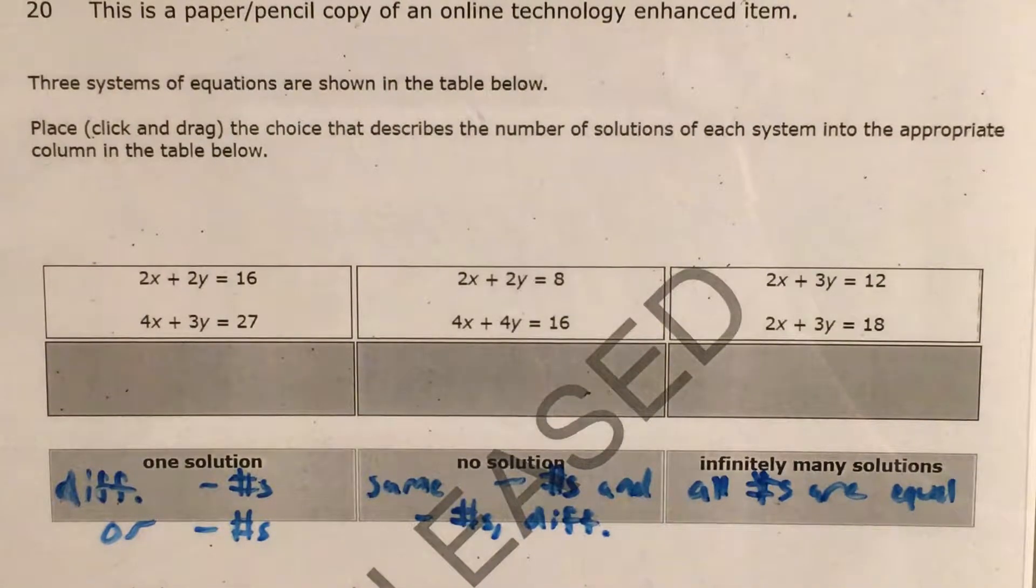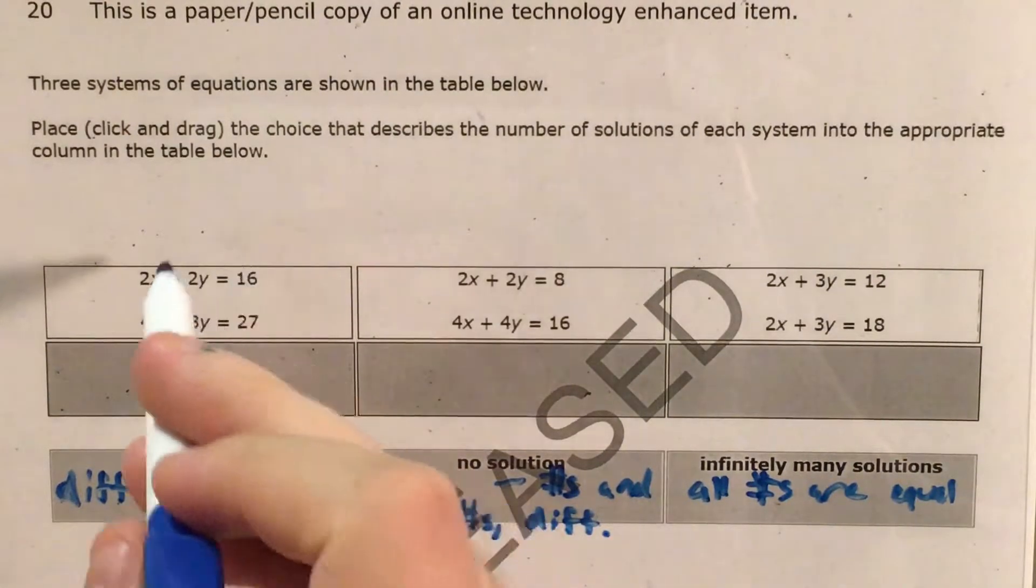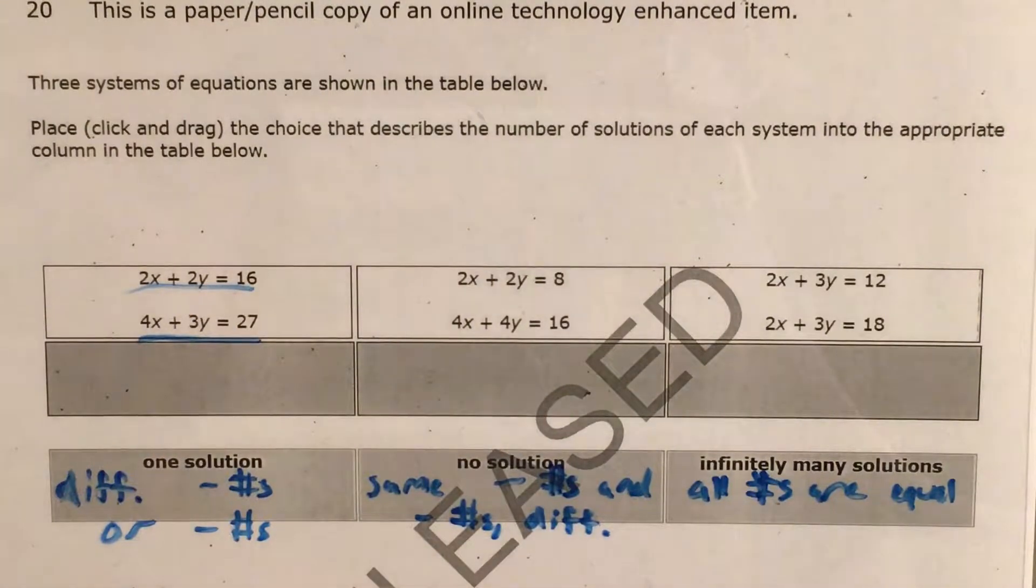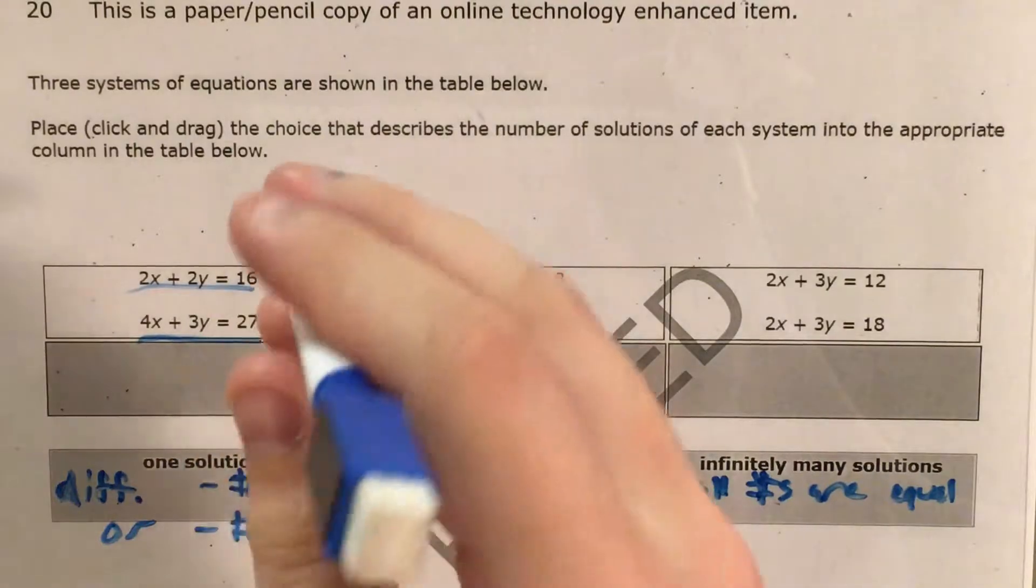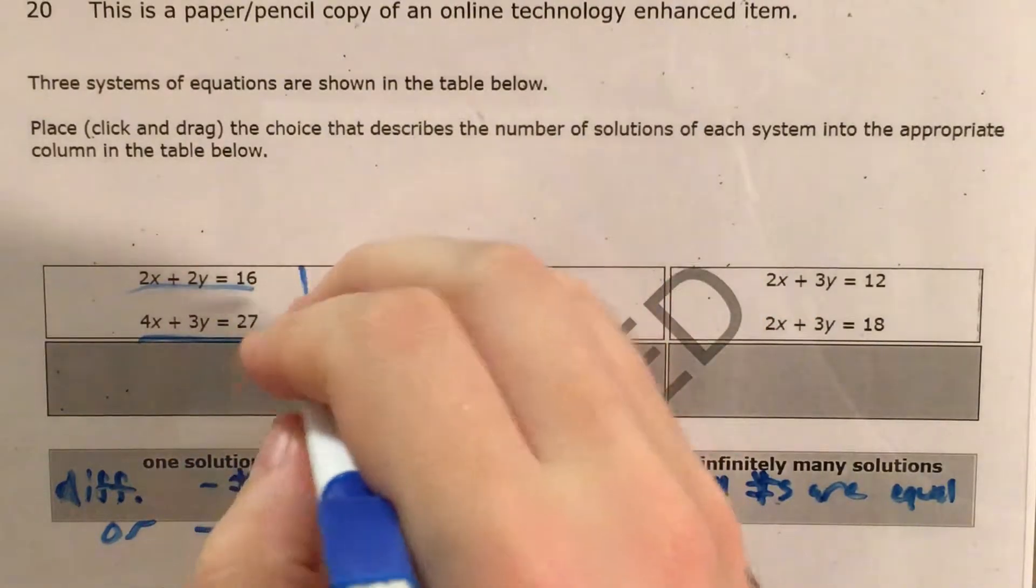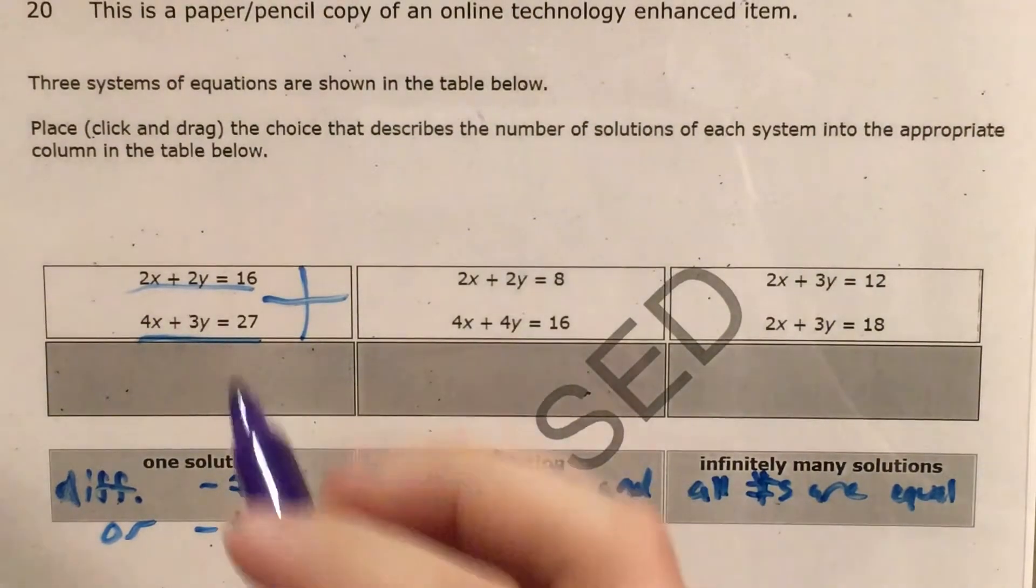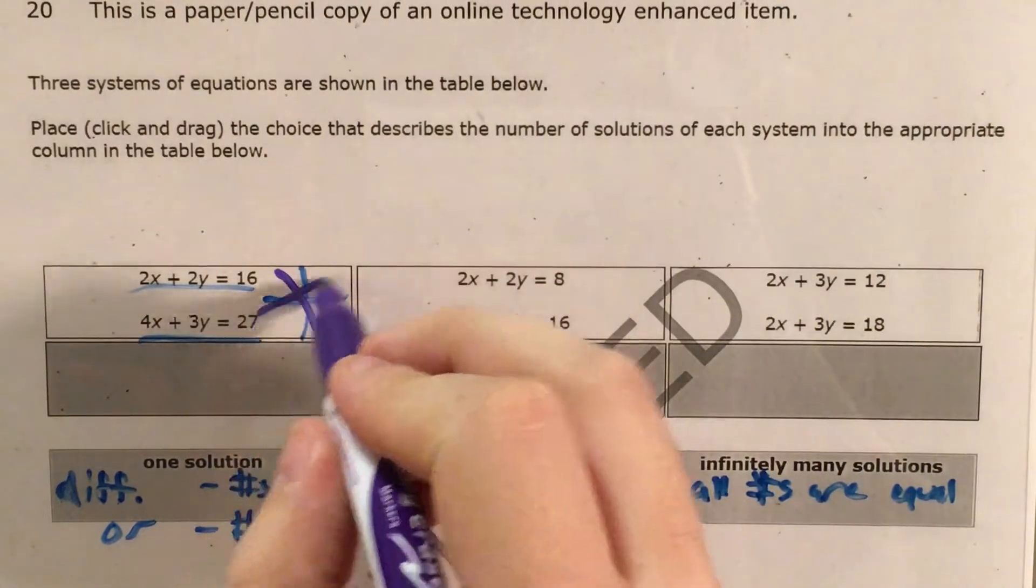A solution is actually some x and y pair that makes this equation true and this equation true at the same time. If you remember seeing these on a graph, you would see a graph, you'd see your first line and your second line.